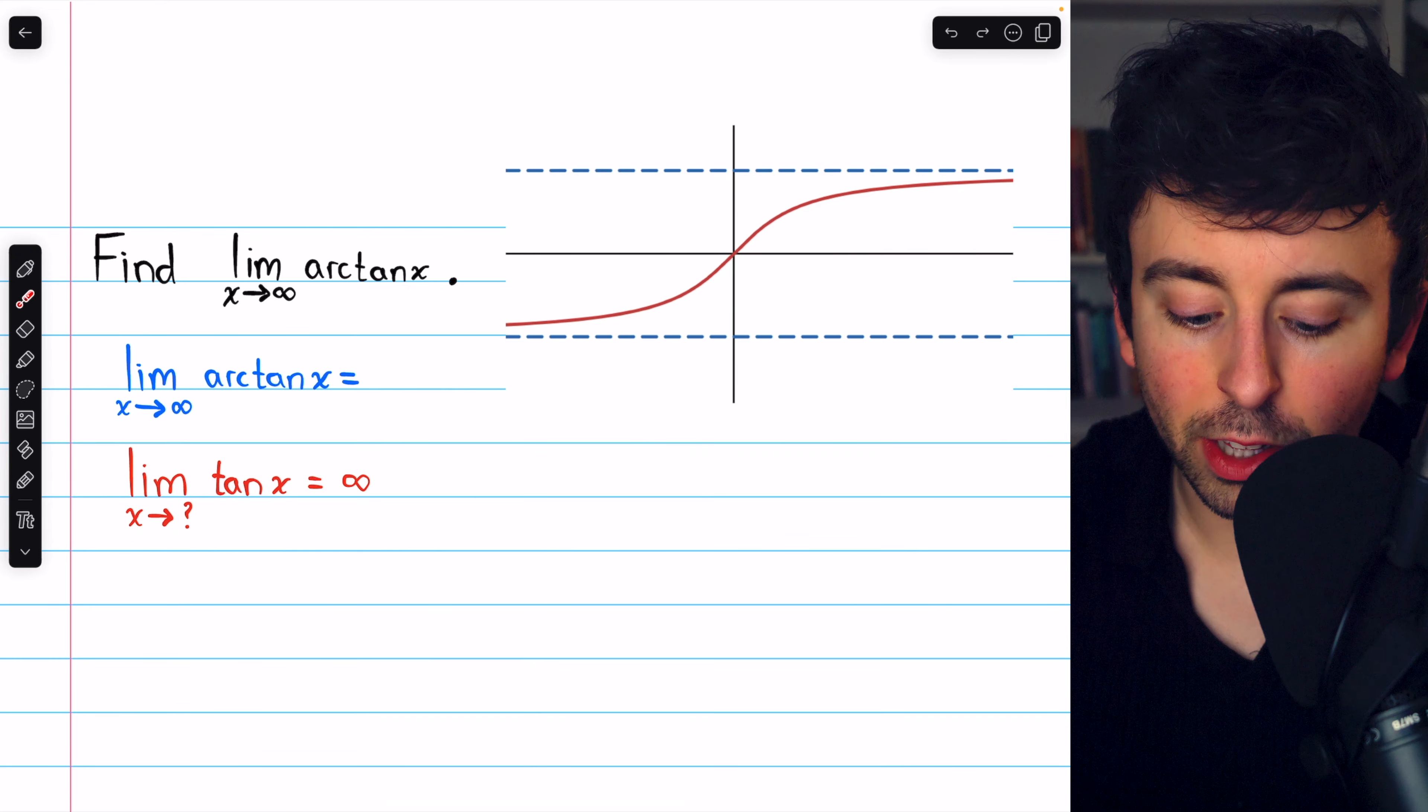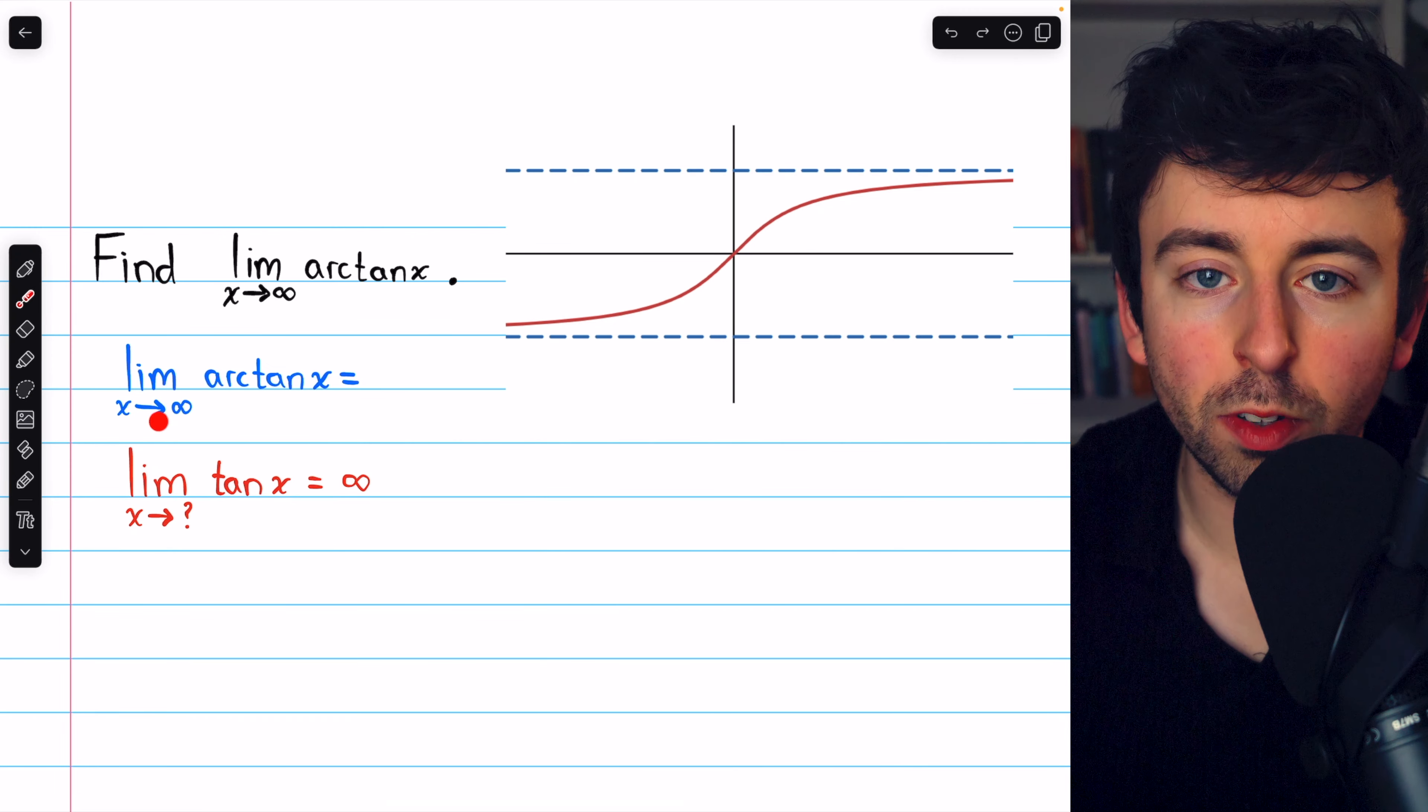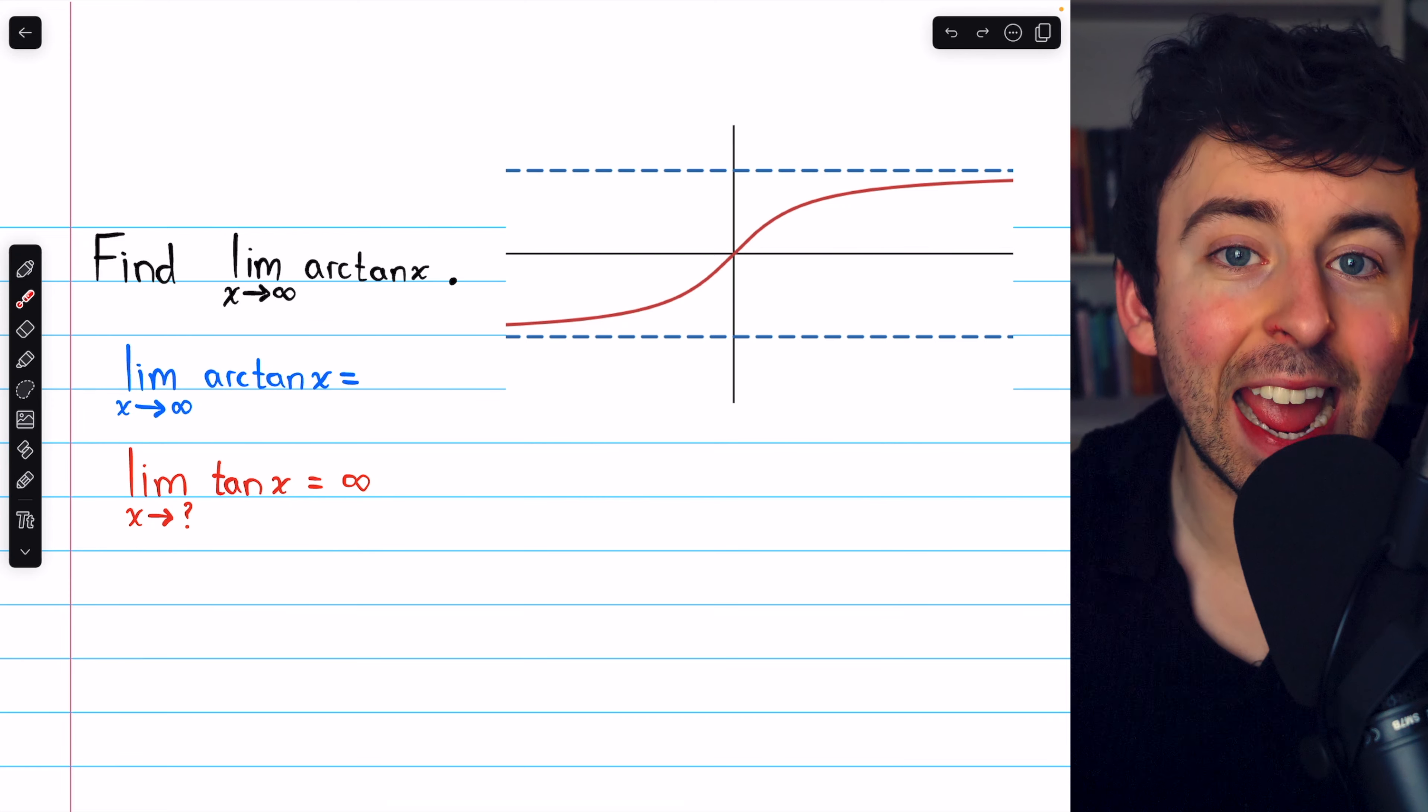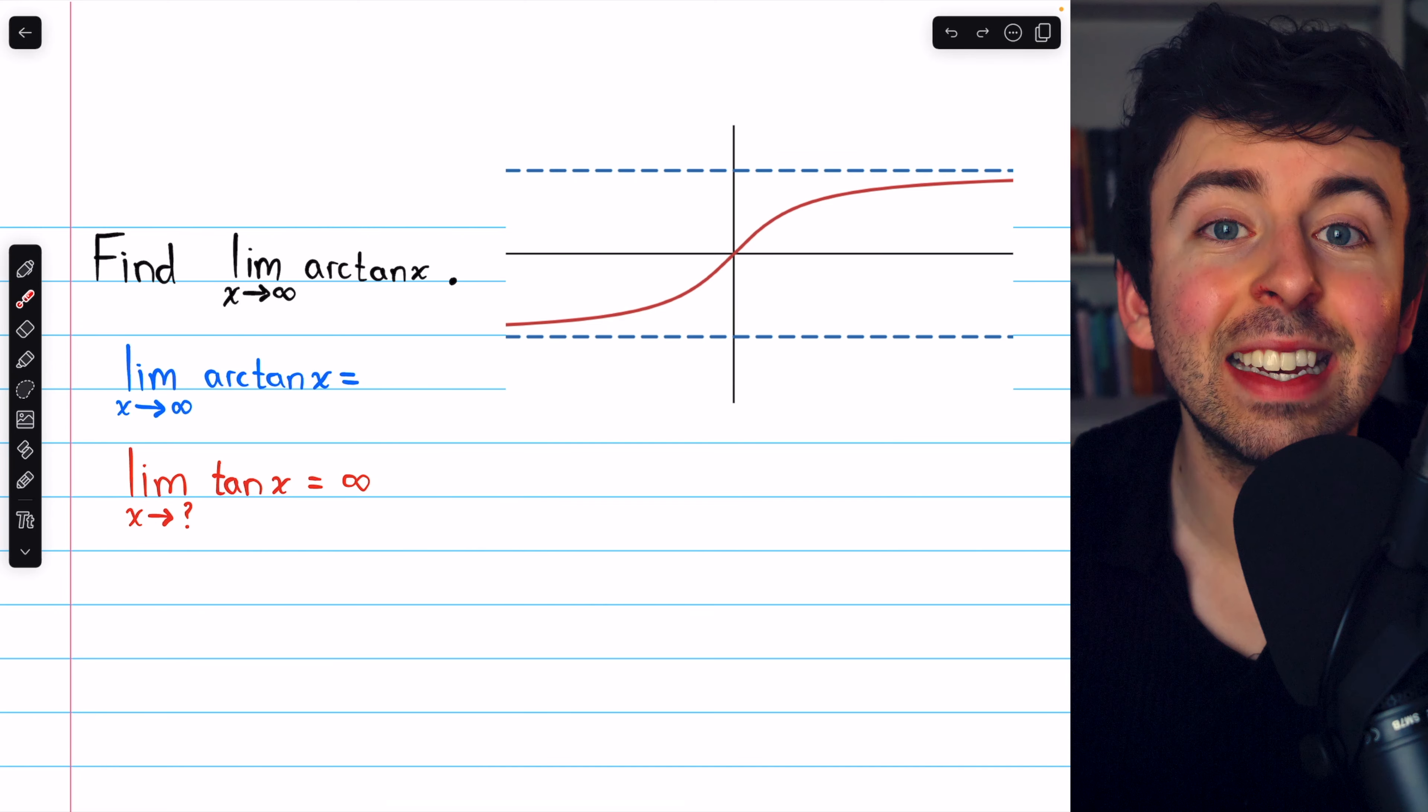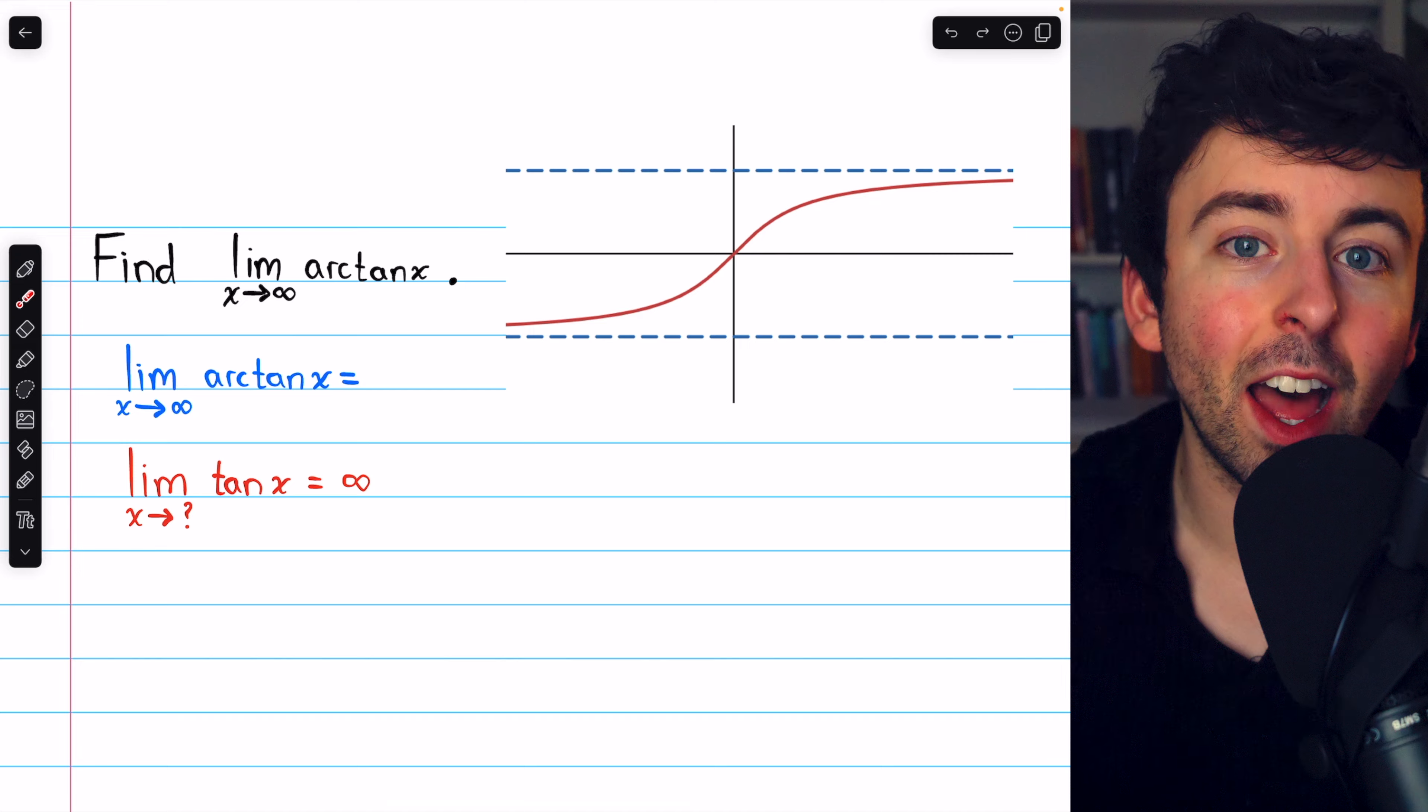So whatever x value makes tangent approach infinity, as x approaches infinity, arctan x will approach that value that made tangent go to infinity, because the input x here you can kind of think of as tangent, because arctan takes tangent and undoes it.